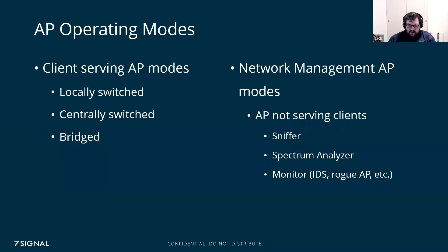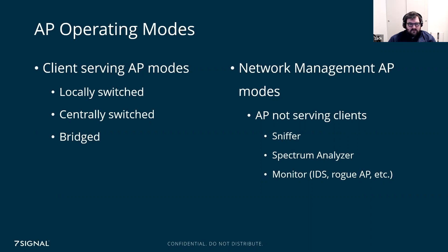You can also change the AP into a spectrum analyzer to view what's happening in the air, graphing the spectrum in real time. Or put it in monitor mode where the AP performs an IDS function — WIPS, for example — only detecting rogue APs. Many access points today offer these options beyond just serving clients, giving you flexibility to use APs for network management purposes as well.